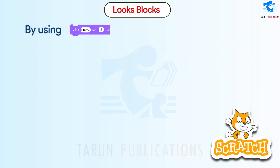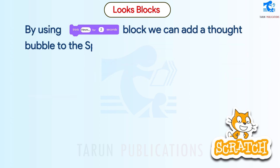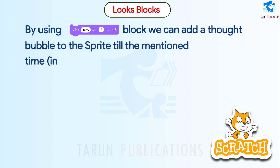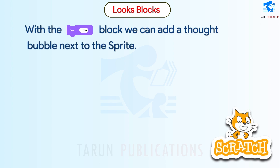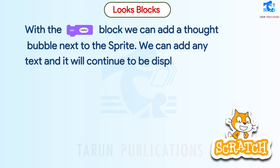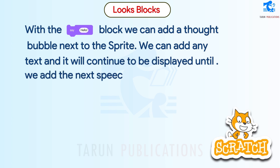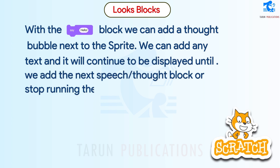By using another block, we can add a thought bubble to the sprite for a mentioned time in seconds. There is also a block to add a thought bubble next to the sprite. We can add any text and it will continue to be displayed until we add the next speech or thought block, or stop running the program.